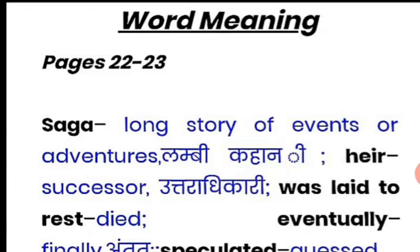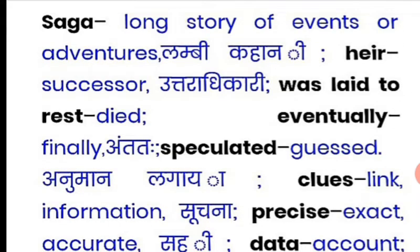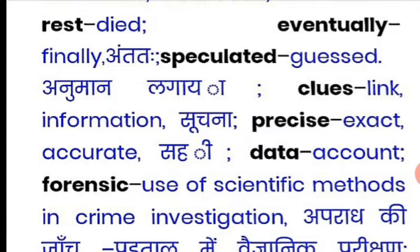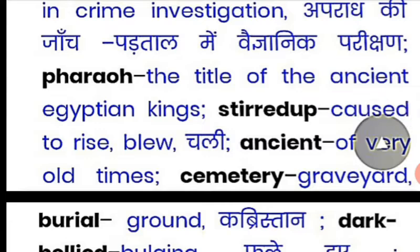So some of the difficult words from our chapter — you will read some and write some in your notebook. First, at page number 22 to 23: 'saga' means a long story of events or adventures. 'Heir' means successors. 'Was laid to rest' means died. 'Eventually' means finally. 'Speculated' means guessed. 'Clues' are pieces of information. 'Precise' means exact and accurate. 'Data' means account. 'Forensic' means use of scientific method in crime investigation. 'Pharaoh' means the title of the ancient Egyptian king.